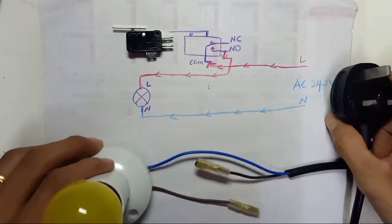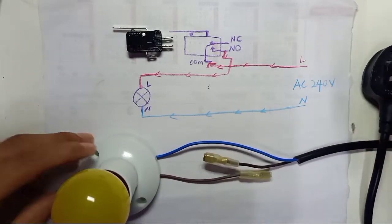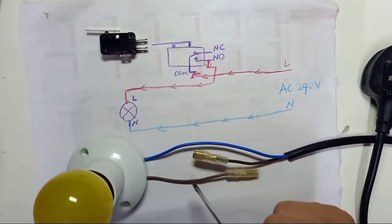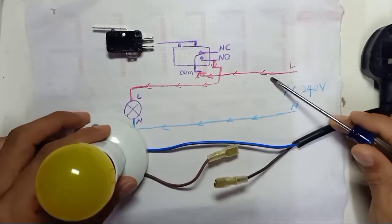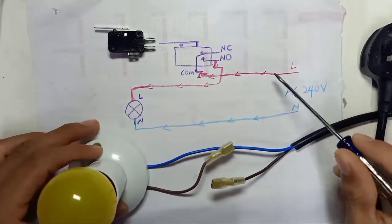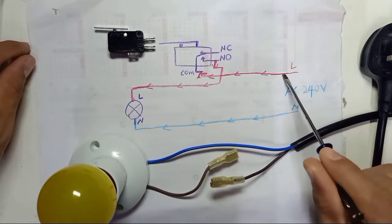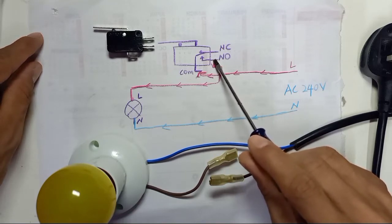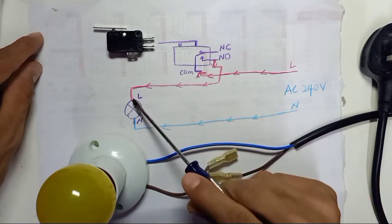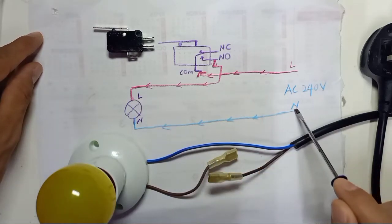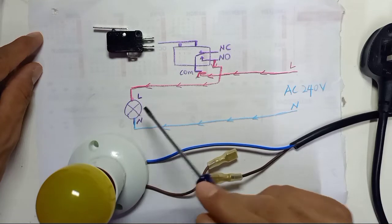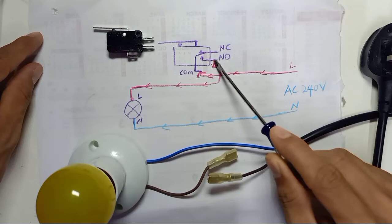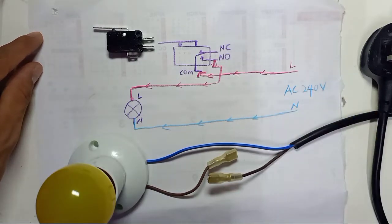Now we're going to use 240 volt AC to connect to this micro switch. You can use 240V AC or DC. In this diagram, the live wire comes to common and comes out from normally open, connecting to the lamp. The neutral wire from the power source connects directly to the lamp. If you want normally closed, just switch to the normally closed terminal.